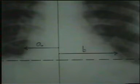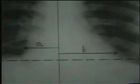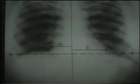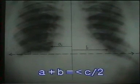To measure the cardiothoracic ratio, draw a vertical line through the center of the spine. Draw lines A and B perpendicular from this line to the maximum widths of the right and left heart borders. A plus B gives the maximum transverse diameter of the heart. It should be less than half of the maximum transverse diameter of the chest — C — which is the transverse line joining the inner borders of the ribs at the widest portion of the chest.